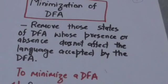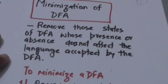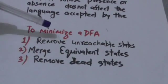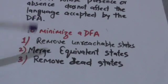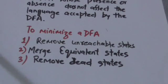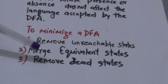Welcome back. In this tutorial we will study about minimization of DFA. Minimization of DFA means removing those states of DFA whose presence or absence does not affect the language accepted by the DFA. To minimize a DFA, first we have to remove unreachable states, then we have to detect equivalent states — also called non-distinguishable states — and merge them, and after this we have to remove dead states.